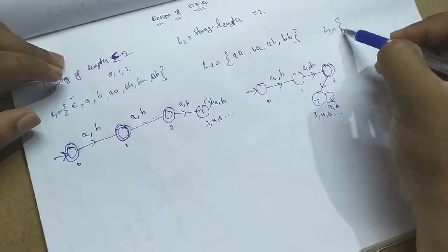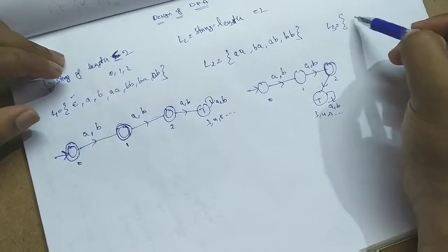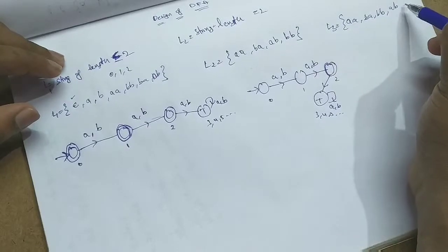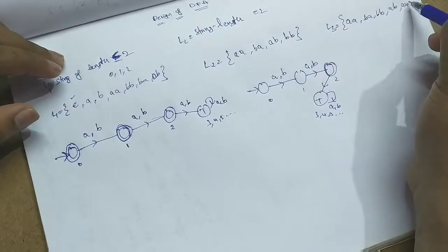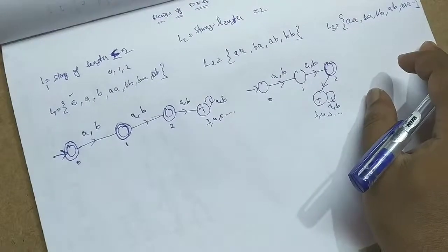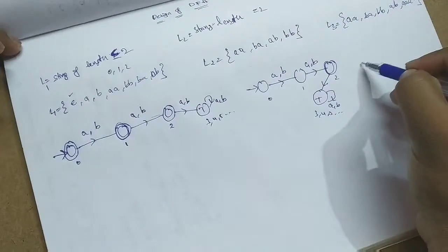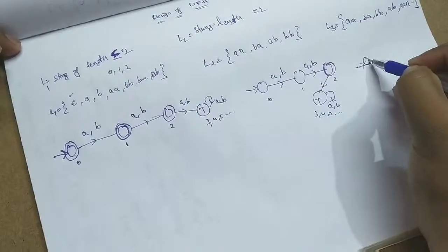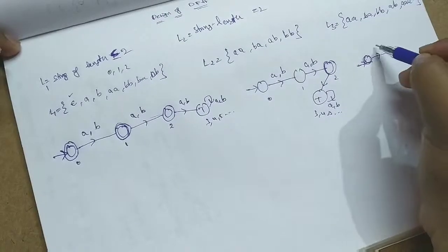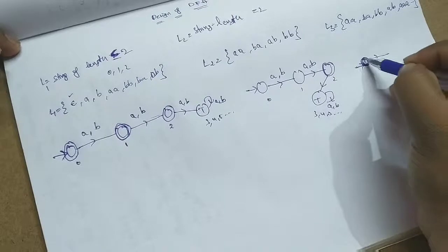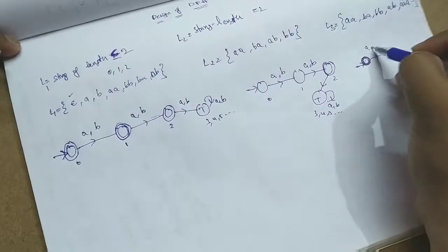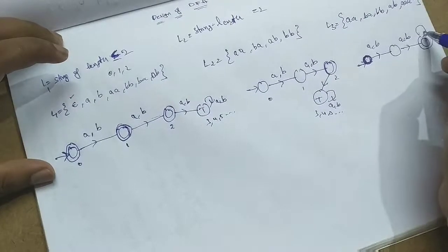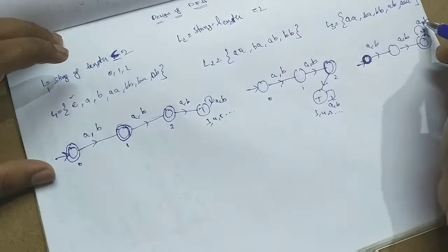We will frame some basic strings. For n greater than or equal to 1, 2, 3, 4, whatever it may be, the DFA will be like this. You have to accept strings of length 2 first — that is not the final state initially. Now I will analyze and I will frame a formula.